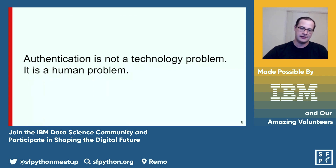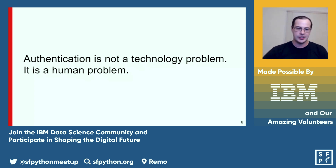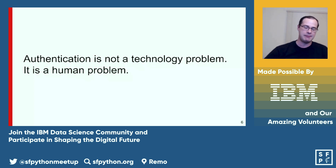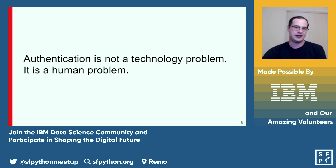Authentication predates technology — it goes back to even prehistoric times. How did you authenticate somebody? You look at their face, hear their voice, see the context, know their possessions. For the longest time, humans have had to adapt to the limitations of technology by memorizing passwords and carrying key fobs. Technology has now reached the point where you can just be yourself, and there's enough that's unique about you to authenticate you.